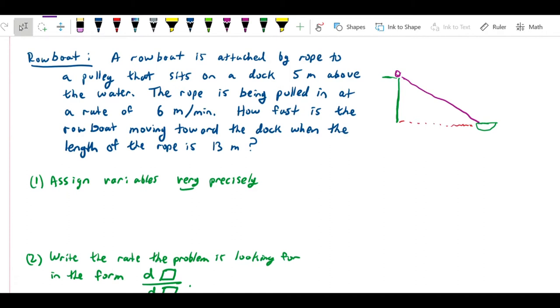In this problem we have a rowboat attached by a rope to a pulley that sits on a dock five meters above the water. I've drawn that here so we have this is five meters and here you can see at the top is the pulley and this purple line is the rope. So the rope is being pulled at a rate of six meters per minute. In other words in this diagonal direction it's being pulled that way at six meters per minute. And the question is how fast is the rowboat moving toward the dock when the length of the rope is 13 meters.